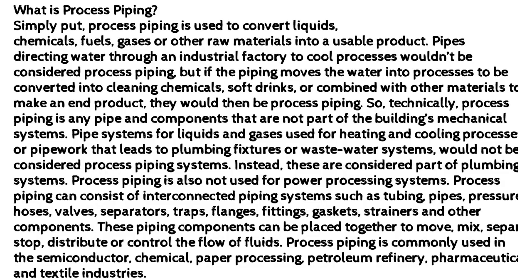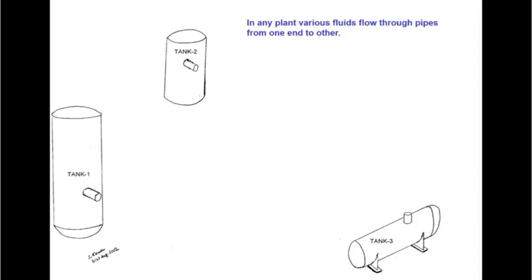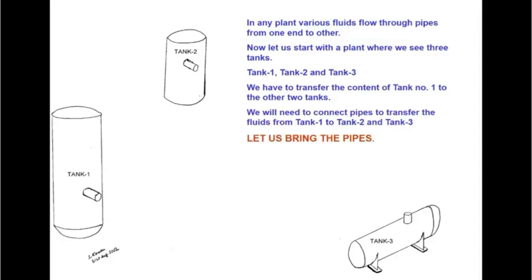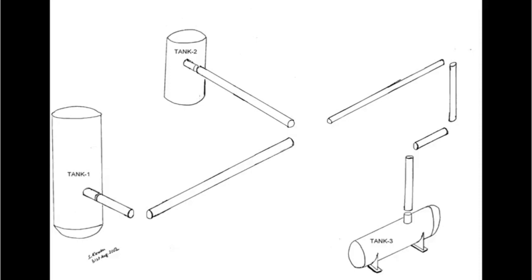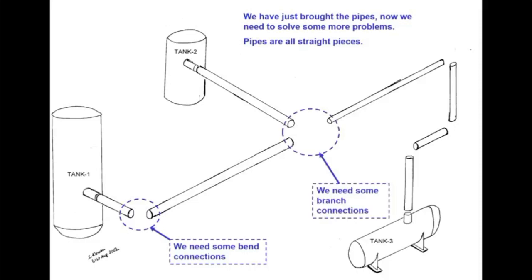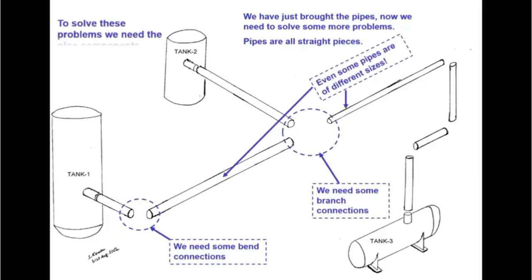Pipes directing water through an industrial factory to cool processes wouldn't be considered process piping, but if the piping moves the water into processes to be converted into cleaning chemicals, soft drinks, or combined with other materials to make an end product, they would then be process piping.